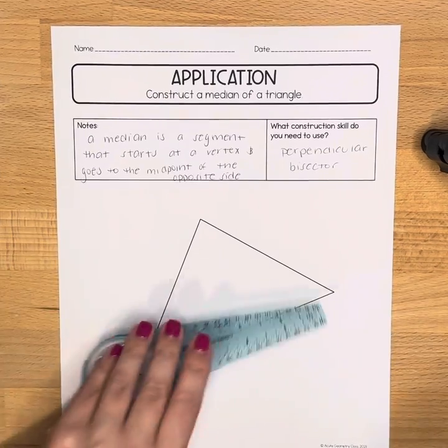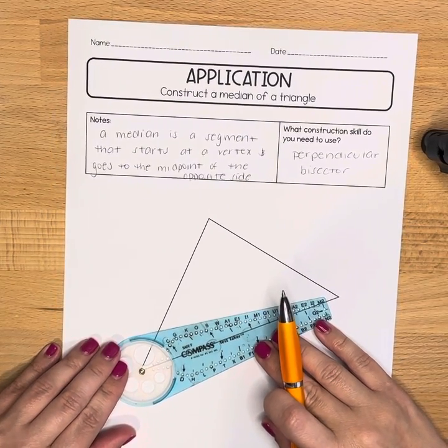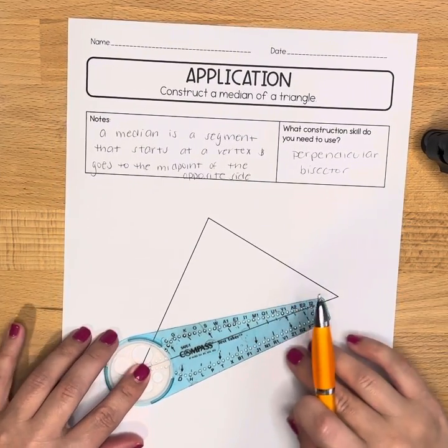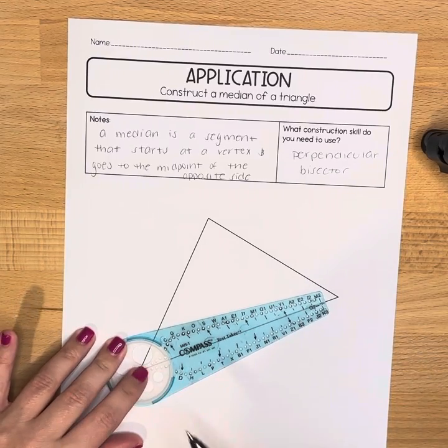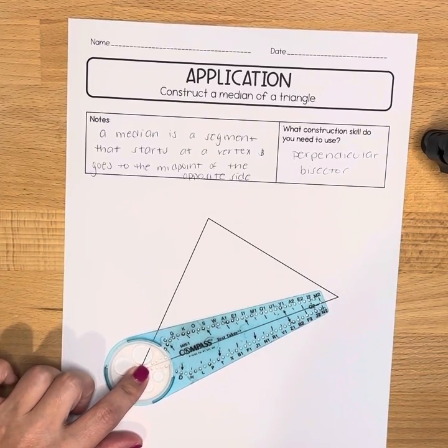So I'm going to do my perpendicular bisector construction. I'm going to put the gold piece on one endpoint, that's me using my safety compass here, a regular compass works as well.